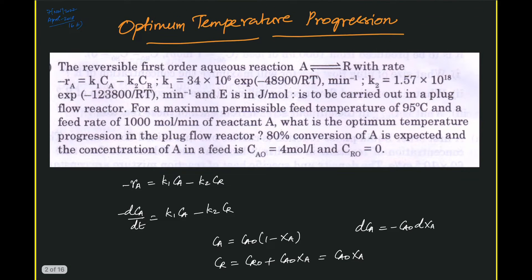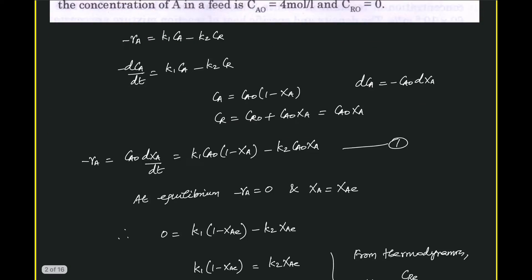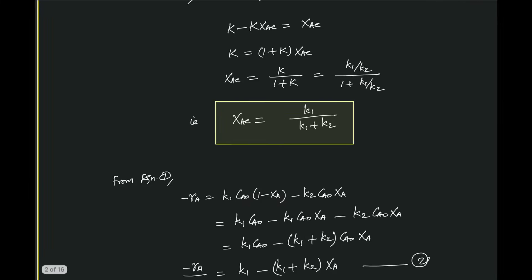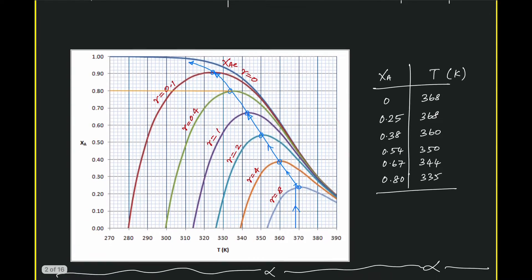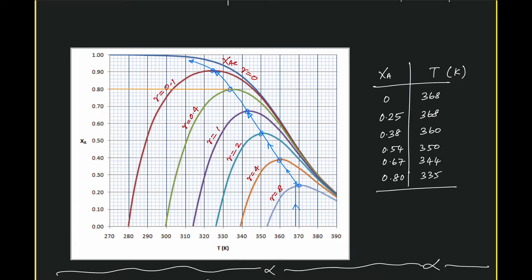Before going to the solution, let us see what is expected. We want to obtain the XA versus temperature plot, which is called the equilibrium conversion plot. In addition to that, there are many other curves of XA versus temperature drawn for positive rates — covering the entire range of temperatures of interest.